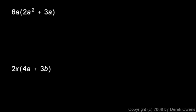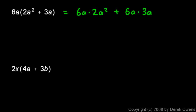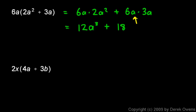The first example is 6a times (2a squared plus 3a). I'm going to multiply 6a times 2a squared, plus 6a times 3a. Working those out: 6 times 2 gives us 12, and a times a squared gives us a cubed, so the first term is 12a cubed. Then 6 times 3 gives us 18, and a times a gives us a squared, so we have 12a cubed plus 18a squared.